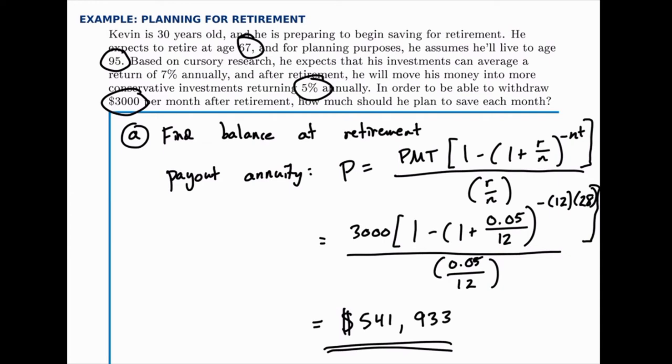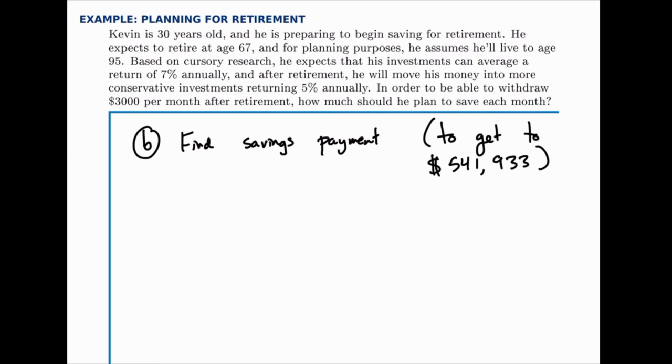Now that we know that, we can go to the second part of the problem, and this is our target for the savings annuity in the first part of the problem. Starting today, at 30 years old, and working forward until the day he retires, he needs to aim to save a total of $542,000. So now we'll shift to the second half, where we'll use a savings annuity to save up to that balance between now and age 67. So now we need to use the savings annuity formula to find what regular payment will get us to $542,000 by the time Kevin reaches 67 years of age.